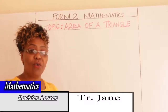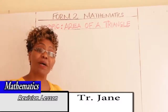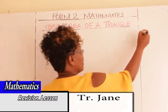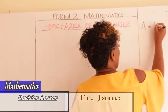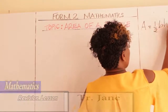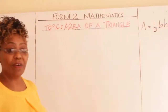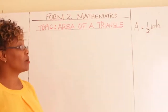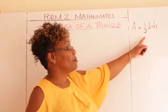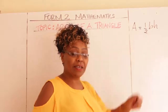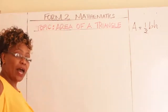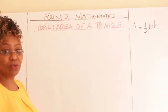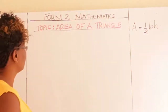All the way from primary school, you've known that area of a triangle is a half base times height. But now in Form 2, we are going to look at two more methods of finding area of a triangle.